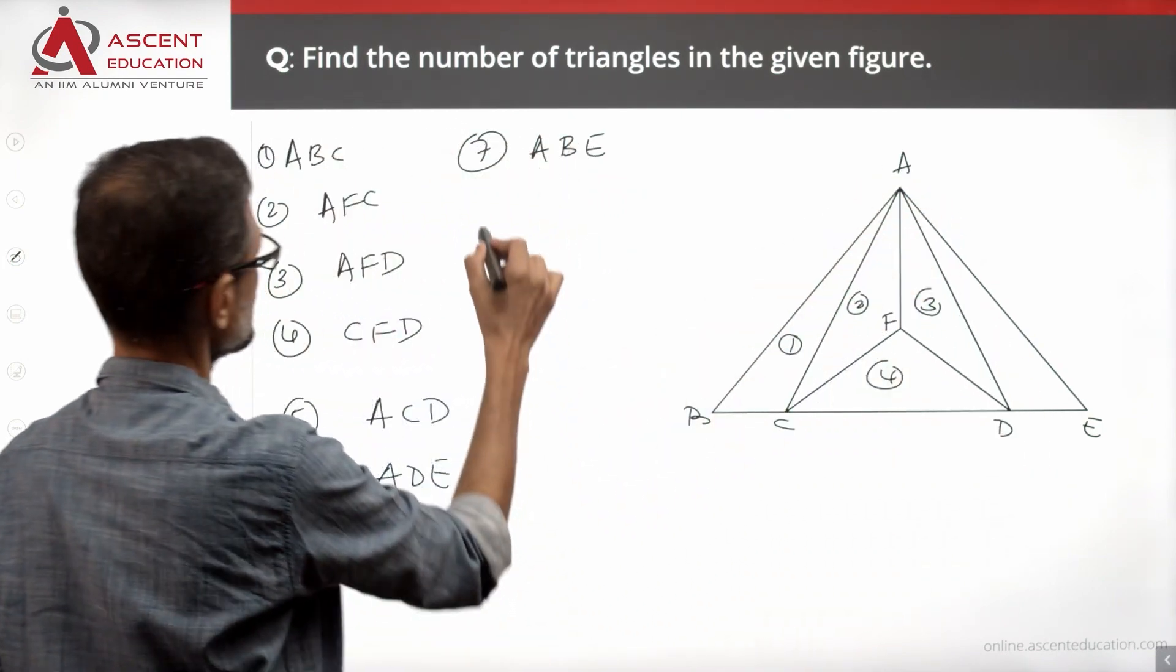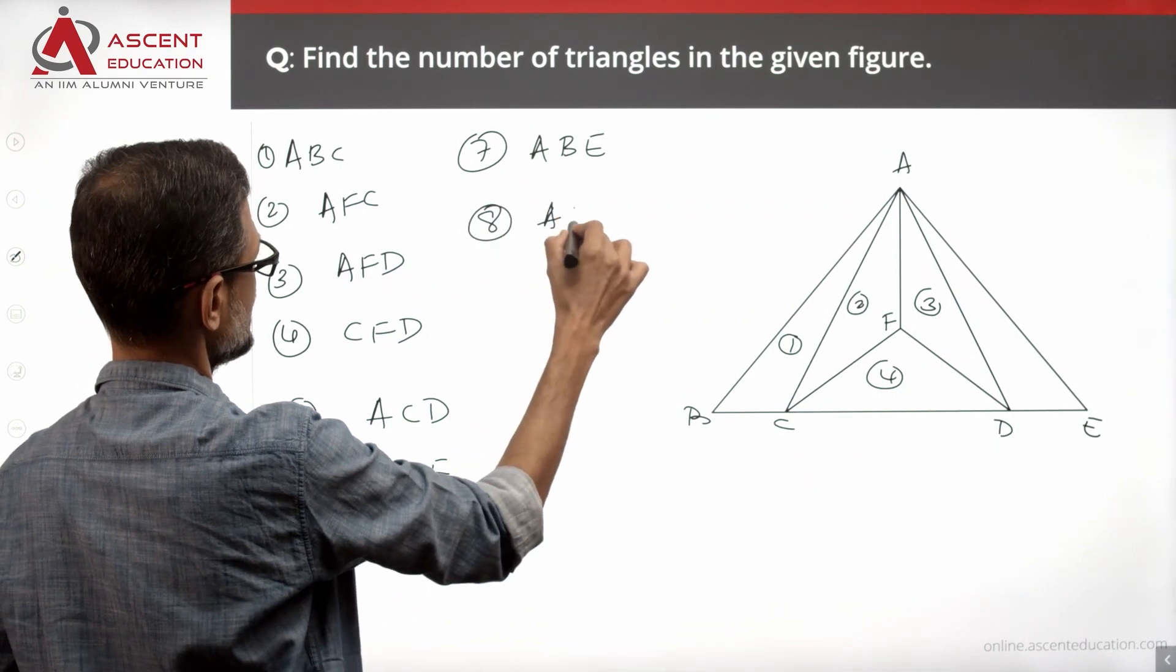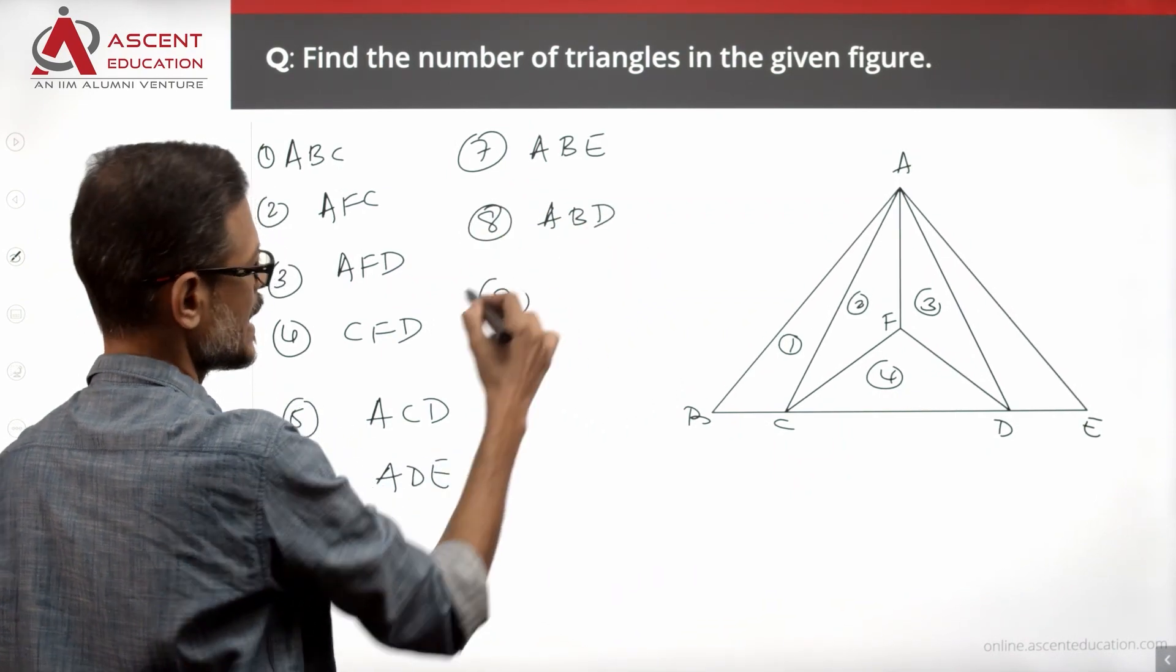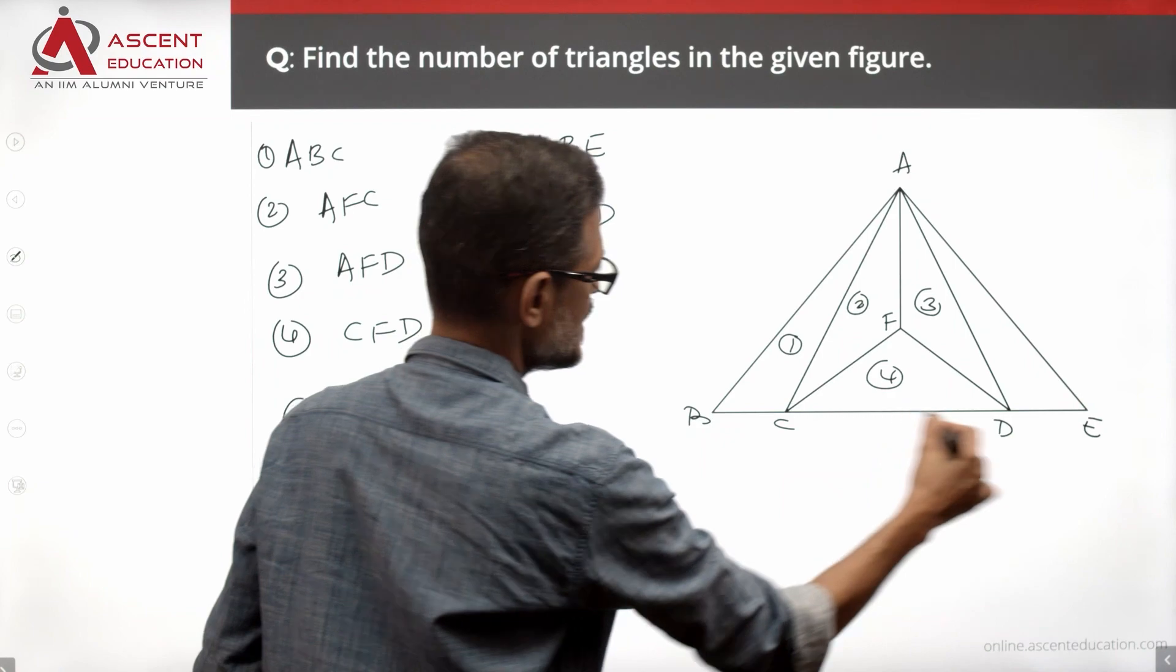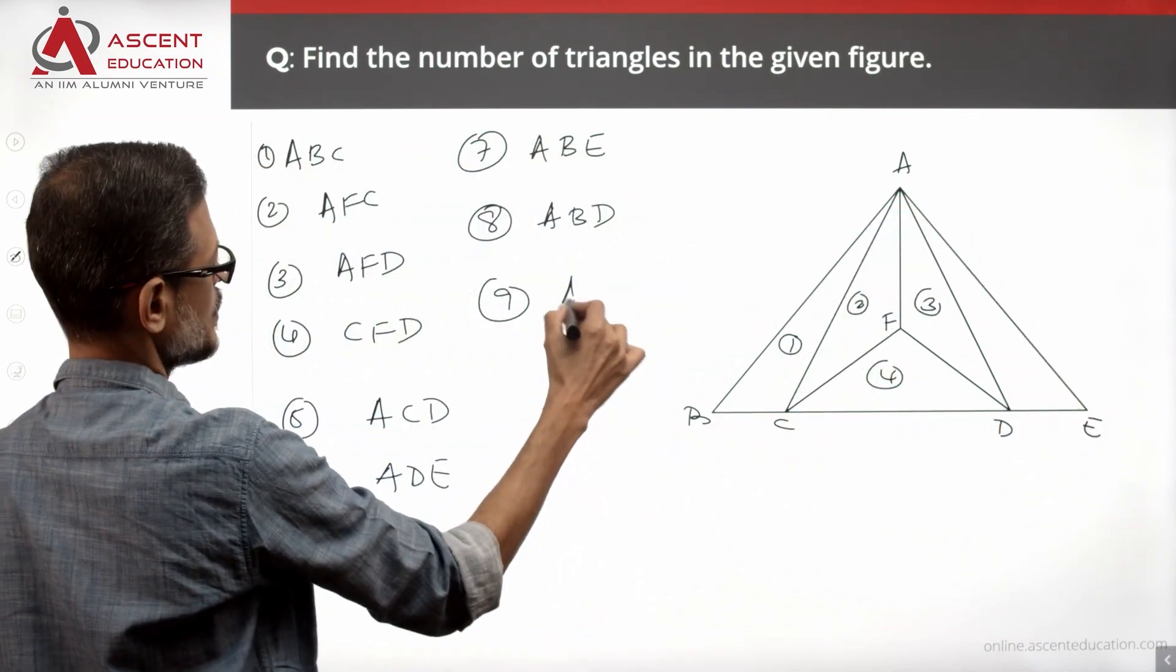A, B, D - we missed that triangle. So that is one triangle. A, B, D is a triangle. There is another triangle: A, C, E is a triangle. That is another triangle we missed.